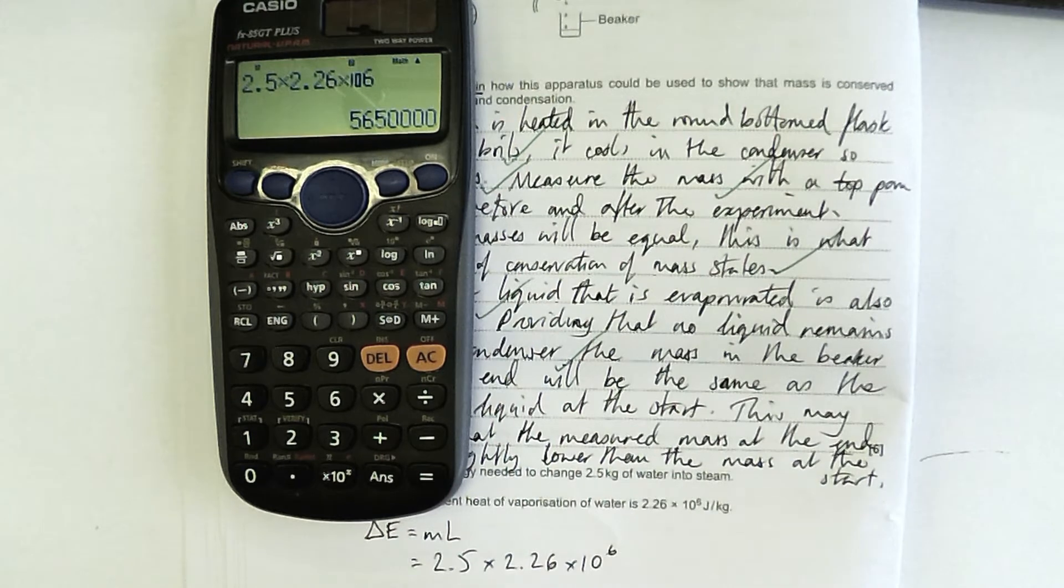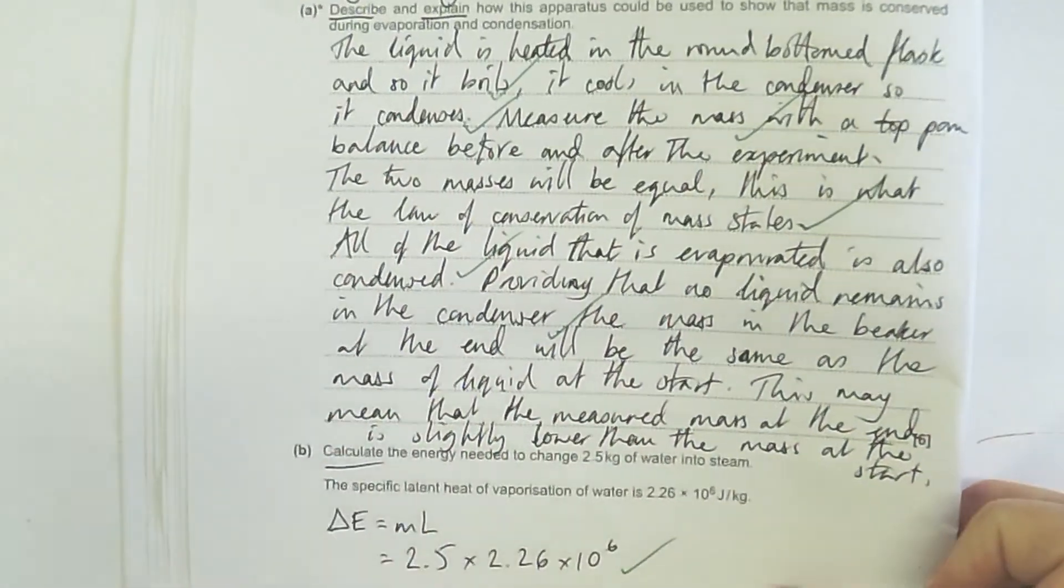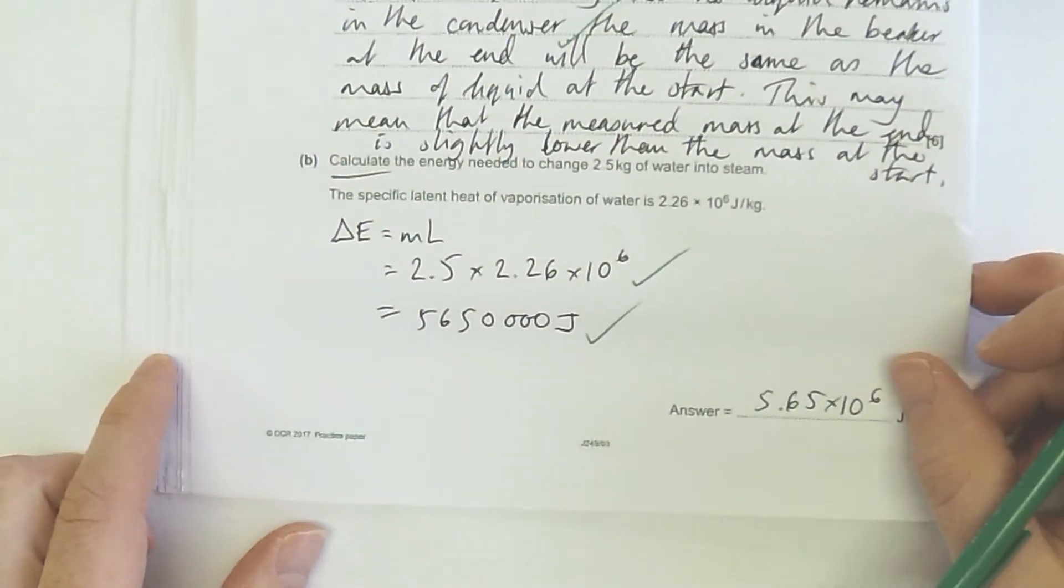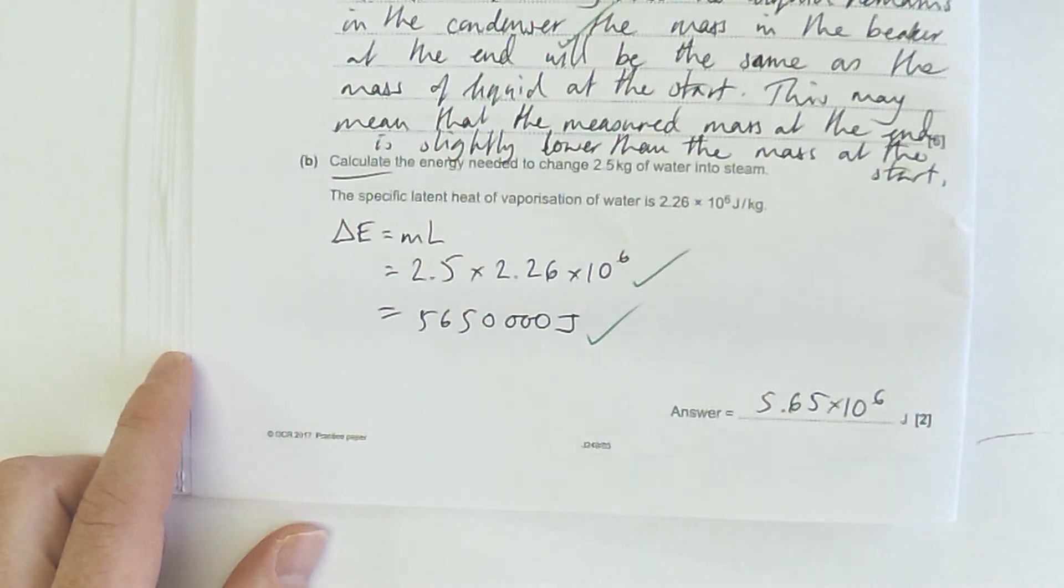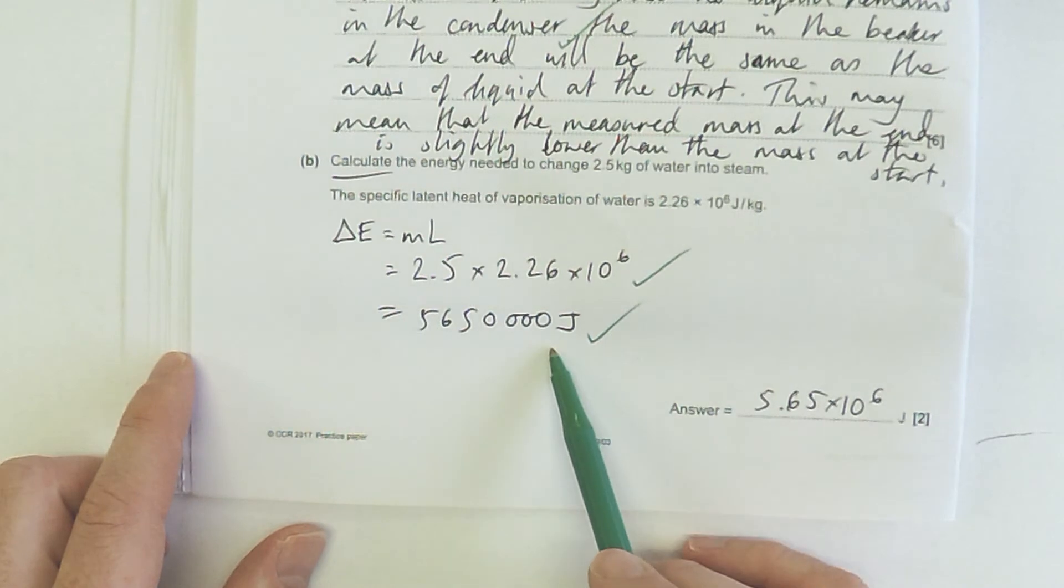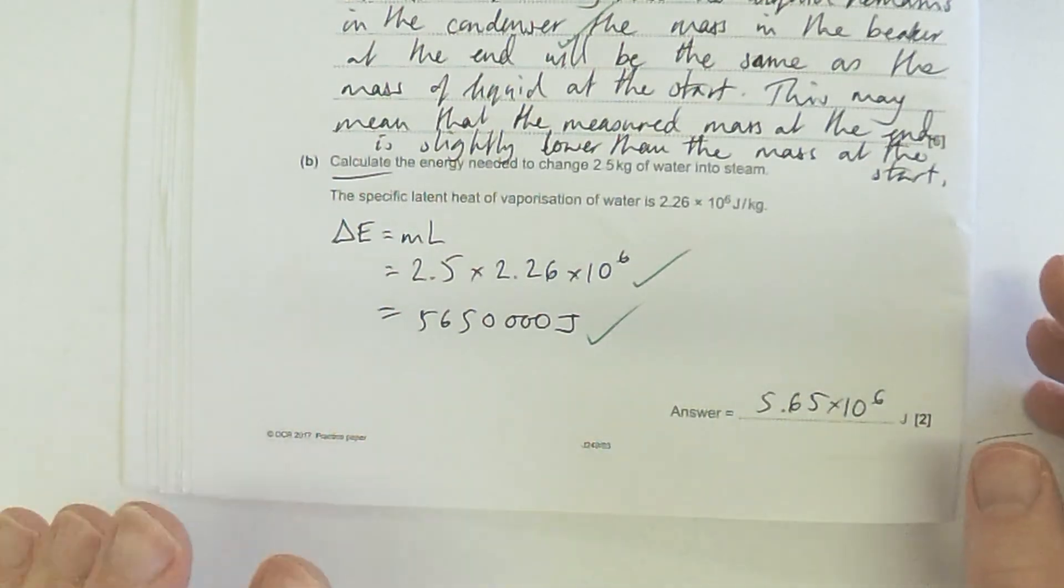5, 6, 5 and then 4 zeros. That's how they want their answer given, although I could convert that into standard form. If I think about the decimal place: 1, 2, 3, 4, 5, 6. That's 5.65 times 10 to the 6 joules. Either way, there's a mark for plugging the numbers in the right place and then a mark for the answer.